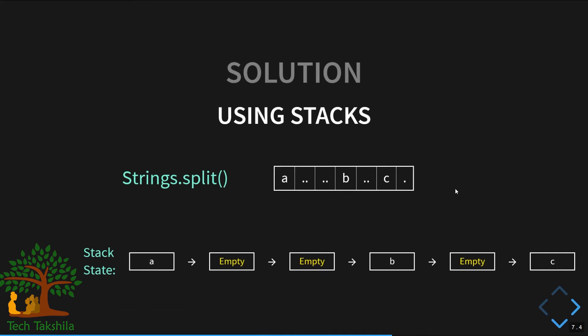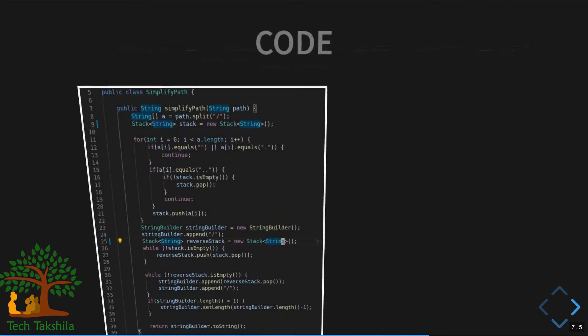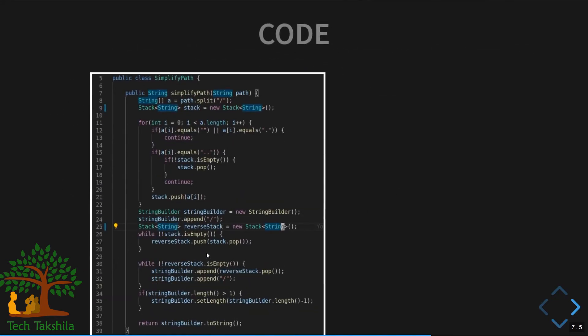Once the loop is done, we reverse the remaining stack elements into another stack to get the correct path order, then pop all elements one by one into a StringBuilder and return that string as our final output.